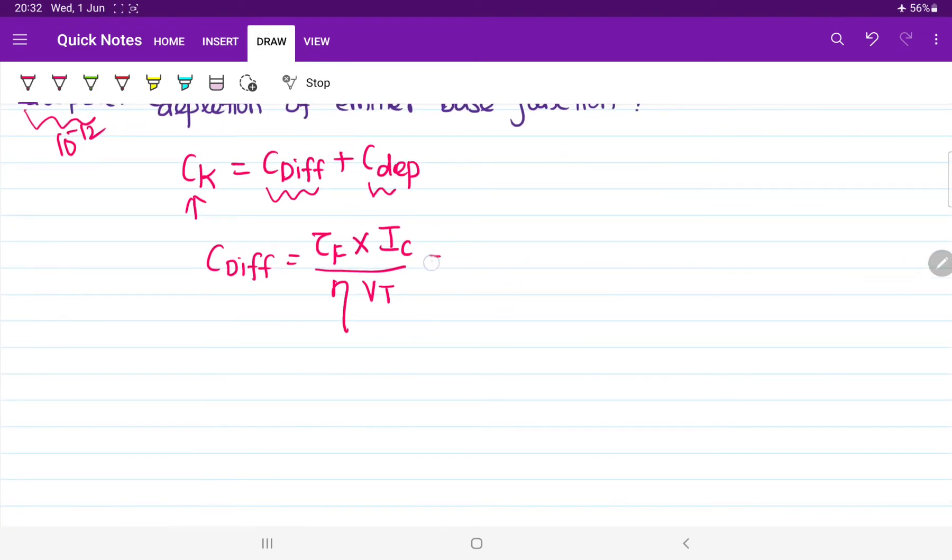Now, let us substitute all the values. The value of eta, that is ideality factor, that value is always equal to 1. Suppose, if it is directly given in the question, take the value of eta equal to 2 or 3. Basically, that value is meant for types of the material that we are using, either silicon or germanium. For silicon, this value is 2. For germanium, this value is 1.